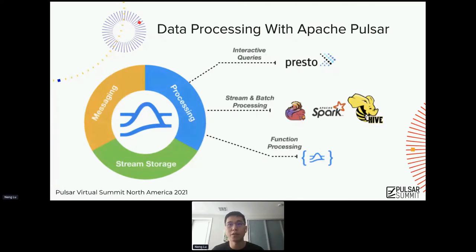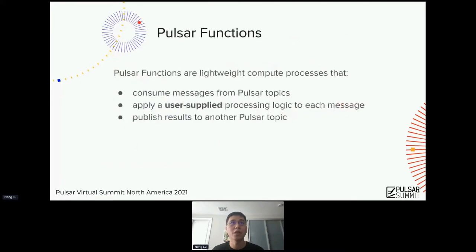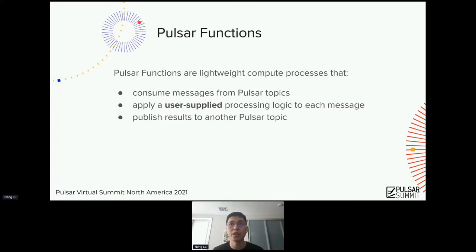We will be focusing on the function processing part. For Pulsar functions, it's a lightweight compute process that can consume messages from multiple Pulsar topics, apply a user-supplied processing logic to each message, and then publish the results to another Pulsar topic. The user-supplied processing logic can be anything you want based on your needs.